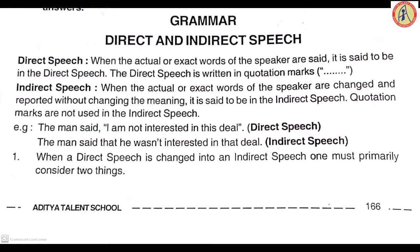What is called direct speech? When the actual or exact words of the speaker are said, it is said to be in direct speech. Direct speech is written in quotation marks. In indirect speech, when the actual or exact words of the speaker are changed and reported without changing the meaning, it is said to be in indirect speech. Quotation marks are not used in indirect speech.